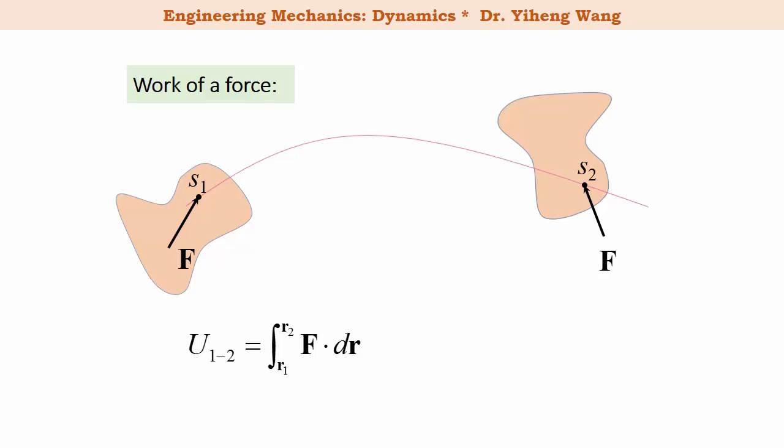Keep in mind that this force is a variable that could change in both magnitude and direction. Since the dot product of two vectors is a scalar, we can write the scalar form: the integration of the magnitude of the force times cosine theta, ds. Theta is the angle made by the line of action of the force and the tangent line along the path, integrated from the initial point S1 to the final point S2. This is the same as what we've learned in particle kinetics.